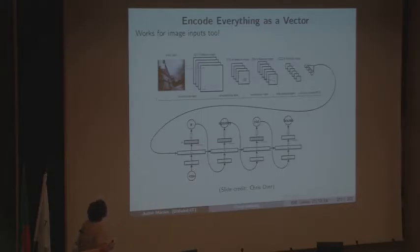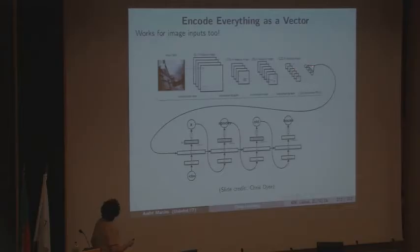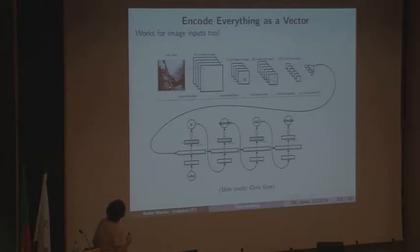This is applying the same idea to generate a caption for an image. The only change is the encoder: instead of an RNN, it's a CNN — a convolutional neural network. It still generates a vector that compresses the image, and the same decoder architecture generates a caption conditioned on that vector, for example generating 'a spooky old house'.